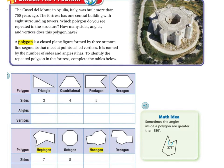First, let's look at this triangle right here. Let's look at the sides — one, two, three sides, so we put three. Let's look at the angles — one, two, three. So there are three angles. Now let's look at the vertices. Remember, the vertices are the points where the sides meet — one, two, three. So we write three.